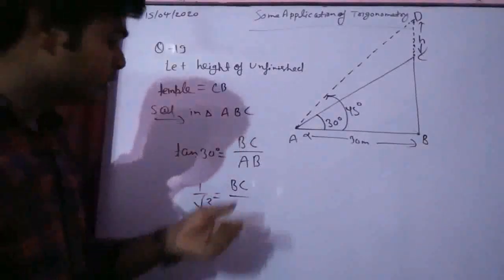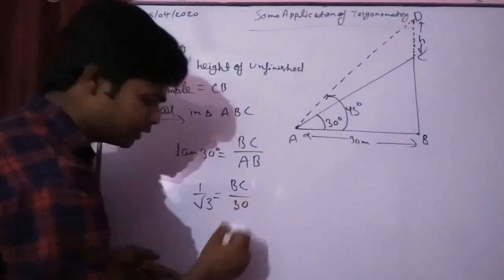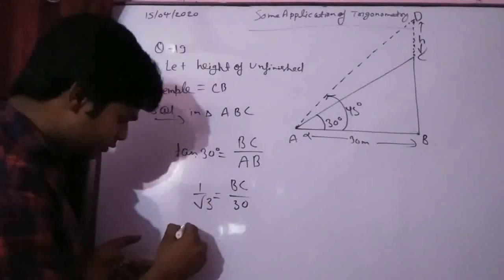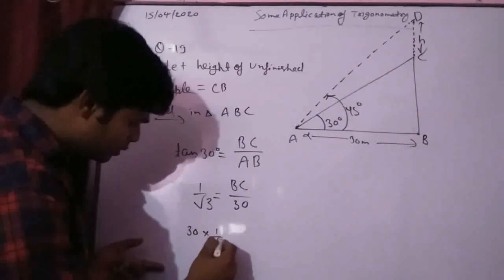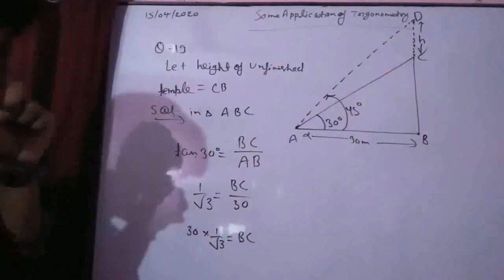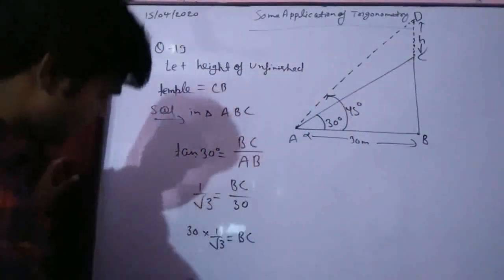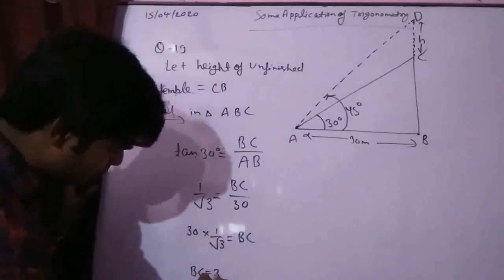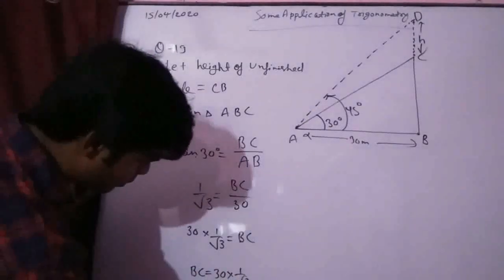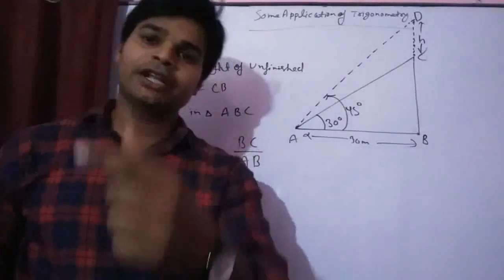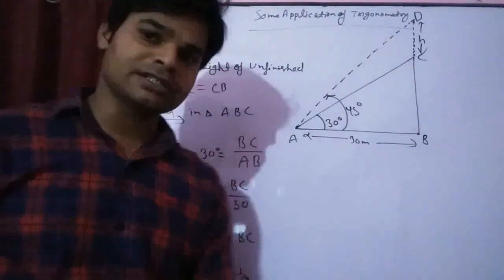Now cross multiply: BC equals 30 into 1 by root 3. We can calculate this easily by rationalization, which gives BC equals 10 root 3 meters.